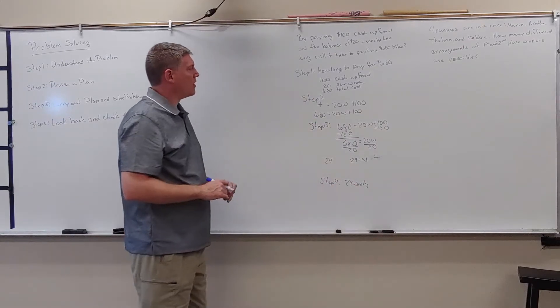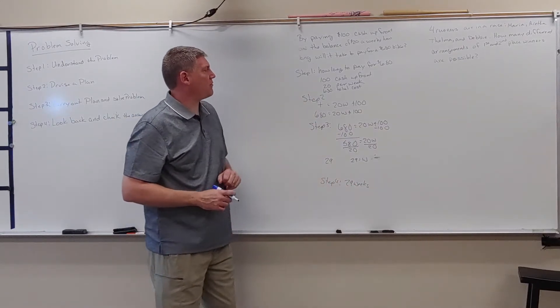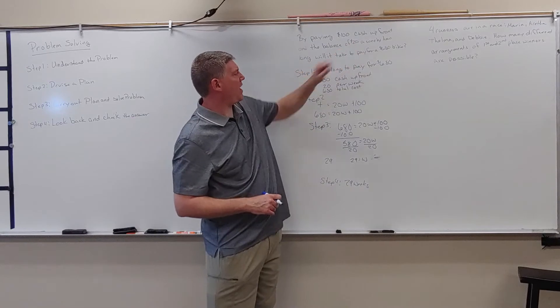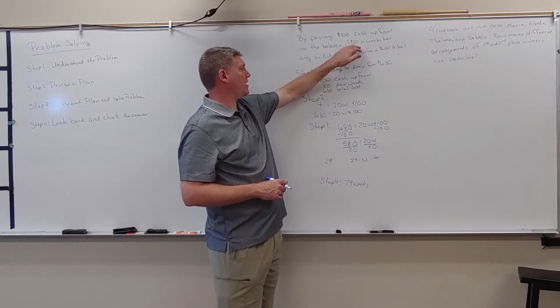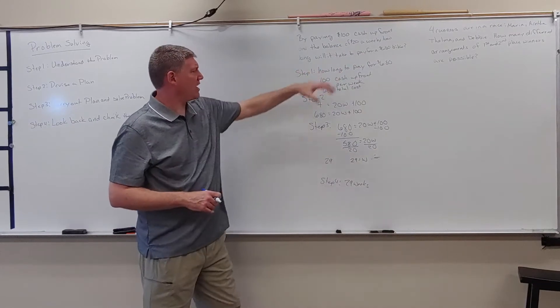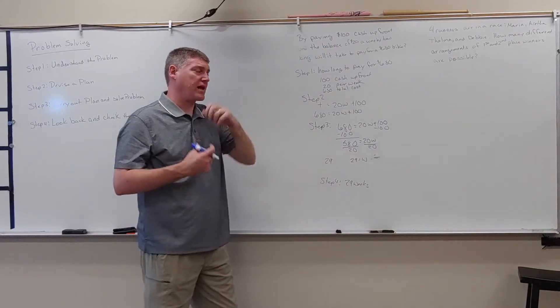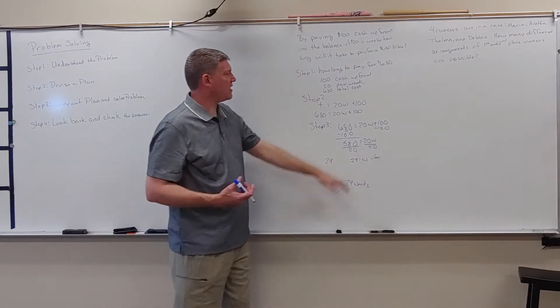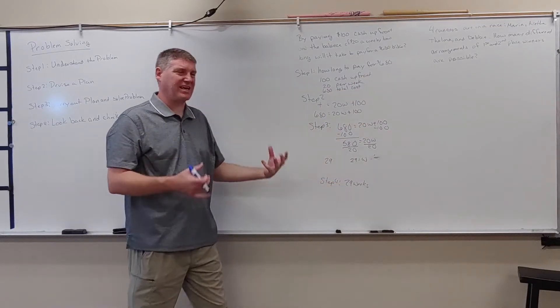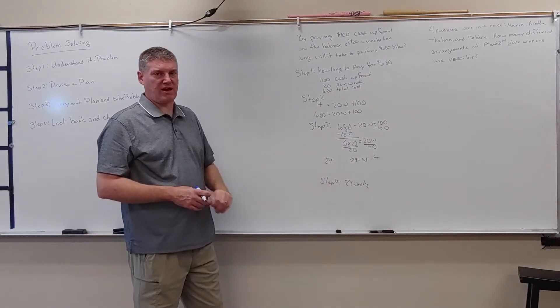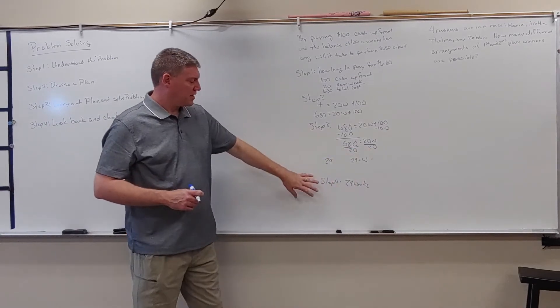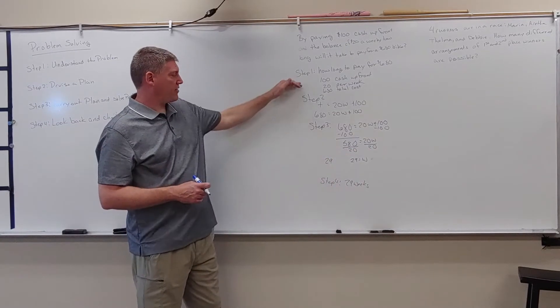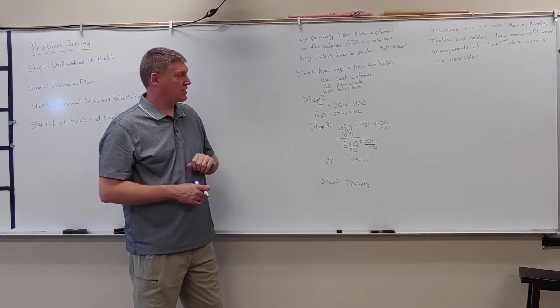So I'm going to look at that, 29 weeks. I'm going to check that. So if I have 29 weeks, I'm going to multiply that by 20. 29 times 20 would be 580. I'm going to add 100 to that. That gives me 680. I've checked it. Does this make sense? Yeah, it makes sense. I didn't have like 100,000 weeks. So I've checked my answer. I've went through all four steps to get it.